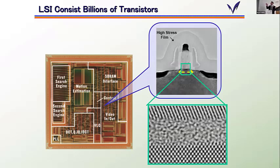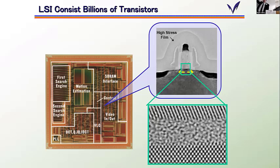The most important structure to operate the transistor is the MOS structure — metal, insulator, and semiconductor. The semiconductor consists of single crystalline silicon, so you can find a very beautiful alignment of silicon atoms, along with the insulating layer and the gate electrode. This is the basic structure of the transistor in detail.